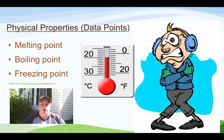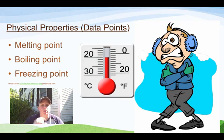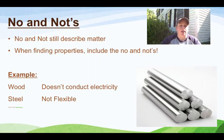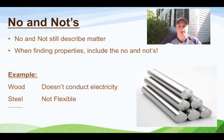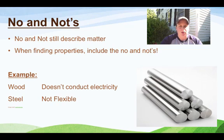I call these the data points. The data points might be its melting point — when it goes from a solid to a liquid — its boiling point from a liquid to a gas, or its freezing point from a liquid to a solid. All of those would be numbers that you report out. Now this is a Burke-ism of mine — I call it the 'no's and the knows.' When you are describing matter in chemistry, you can always say something is not. So you can say steel is not flexible, or that wood doesn't conduct electricity. Don't be afraid to include the no's and the knows.